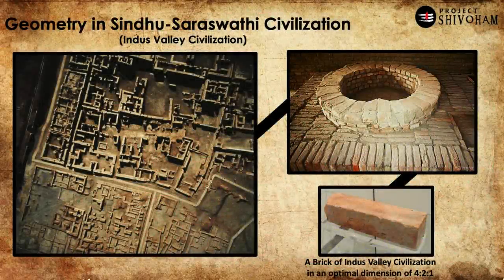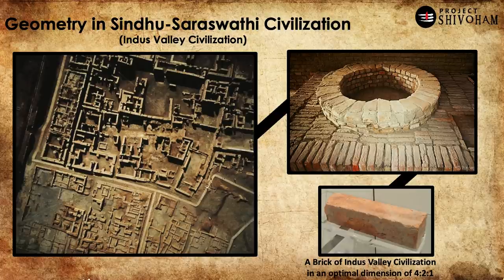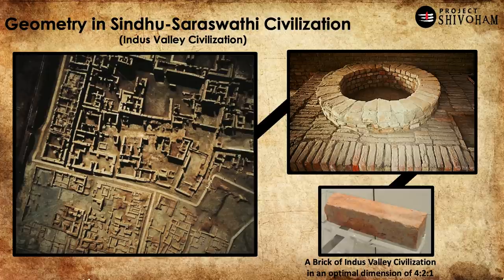Another very important line of thought is the Sindhu Saraswati civilization, or Indus Valley civilization — a civilization that thrived more than 5000 years ago in the region of Harappa and Mohenjo-daro. One very interesting fact is the Harappan brick. Researchers have found that the bricks used in the Sindhu Saraswati civilization have dimensions in the ratio 4:2:1, which is one of the most optimal dimensions for the best structural integrity. Without a deep sense of geometry, this is simply impossible.